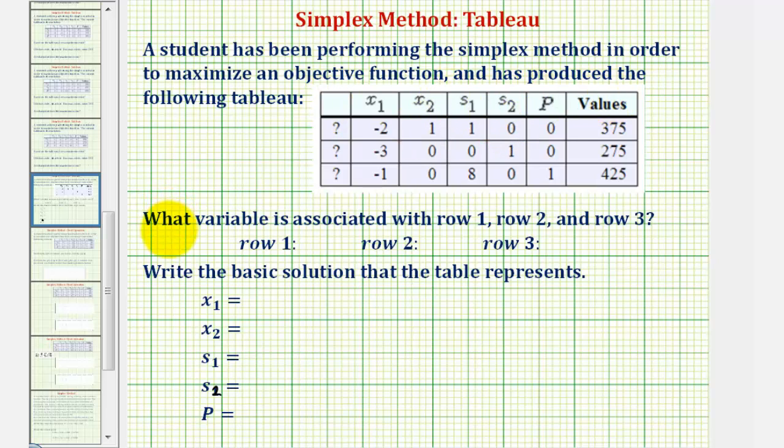We first want to determine what variable is associated with row one, row two, and row three, which is normally labeled here on the far left where these question marks are. This also indicates which variables are active.